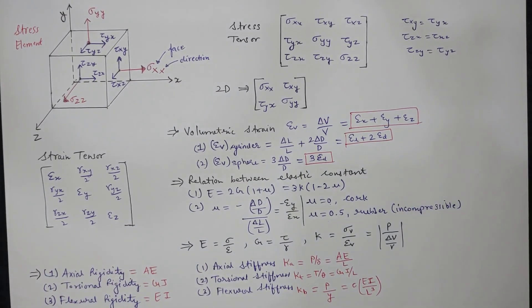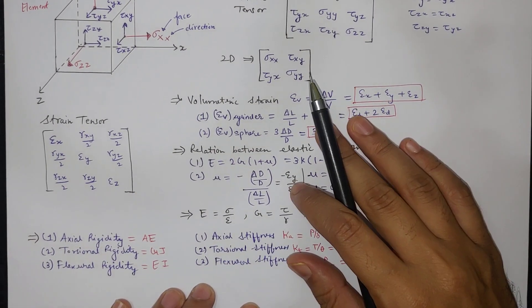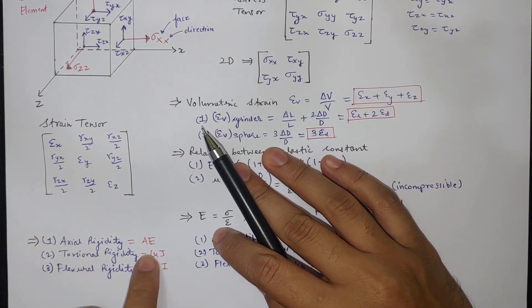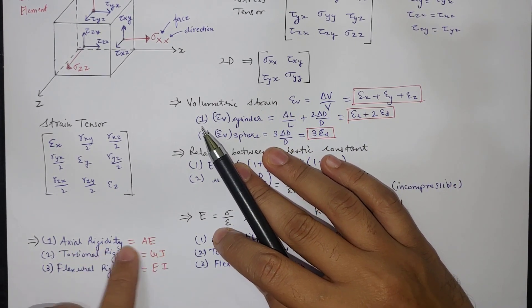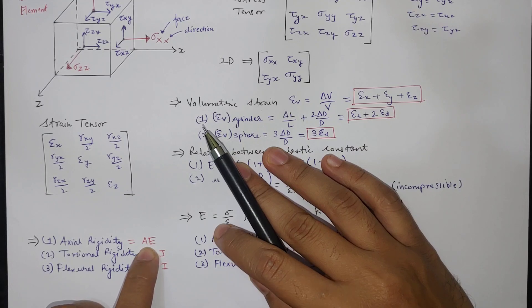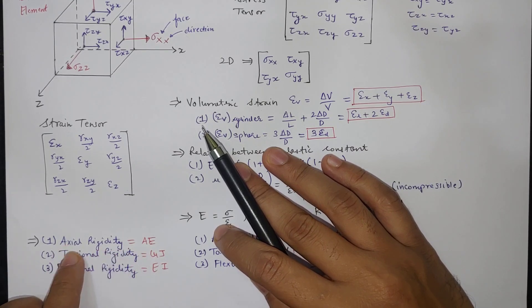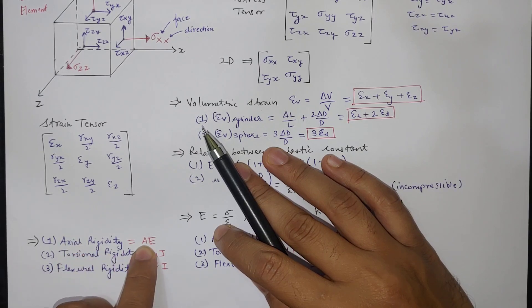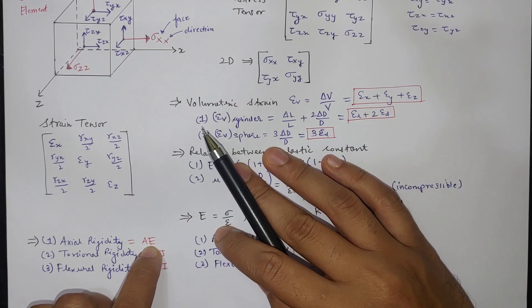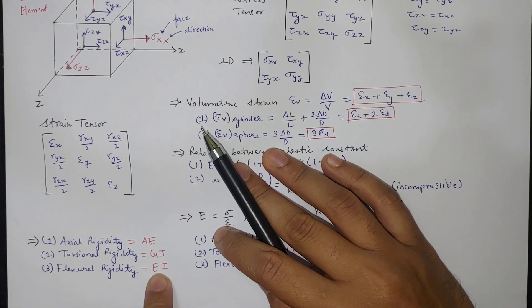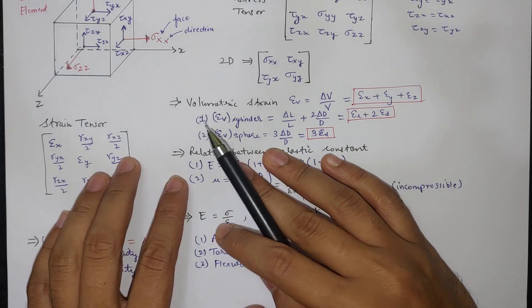Now if you see these are some important terms like rigidity. So axial rigidity is area into E. So the rigidity is how much it resists the deformation, so how much rigid it is. And the more the area, more will be the rigidity, more the young modulus more the rigidity. Similarly in torsional direction GJ and flexure direction EI. So flexure means bending.